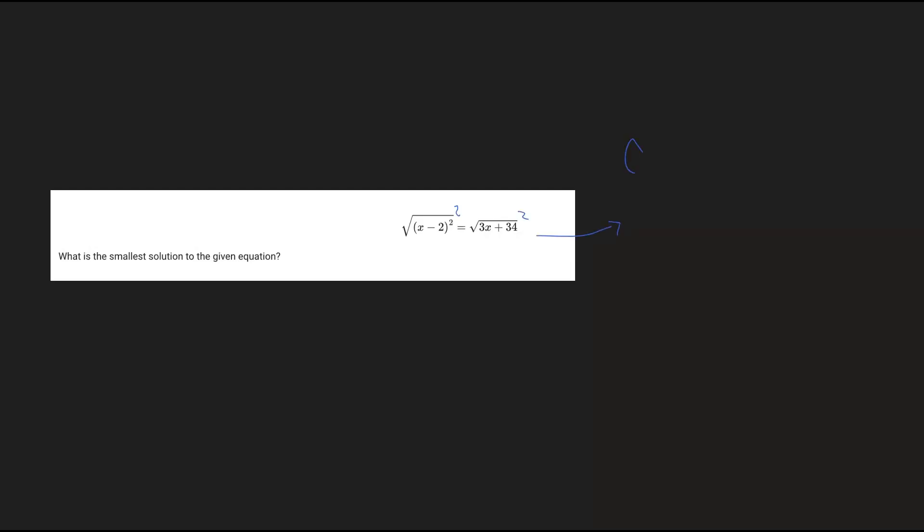We'll bring this over, and now we're left with the following equation: (x minus 2) squared equals 3x plus 34.